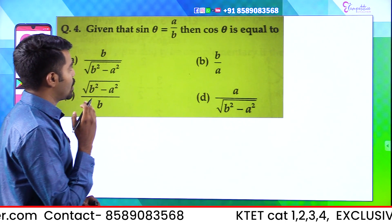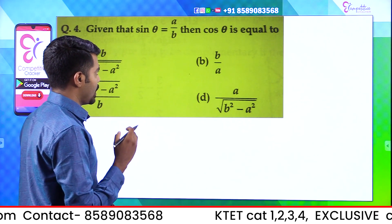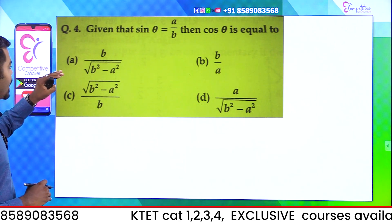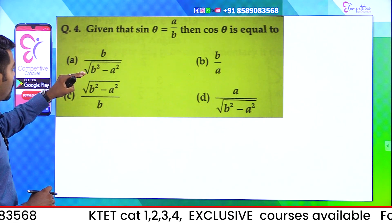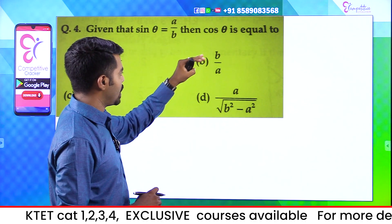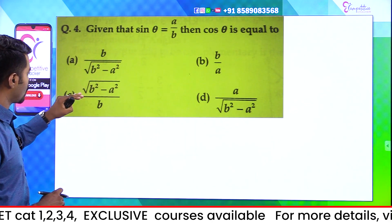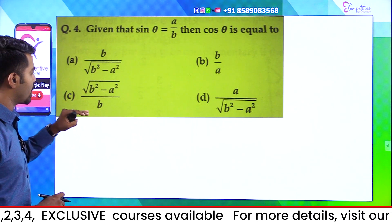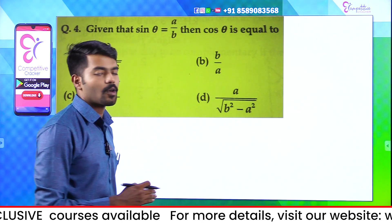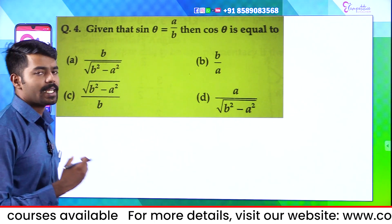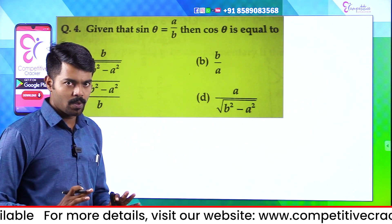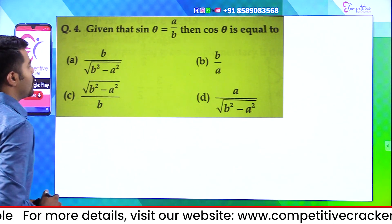Given that sin θ = a/b, then cos θ equals: Option A, b/√(b²−a²); Option B, b/a; Option C, √(b²−a²)/b; Option D, a/√(b²−a²). How do we do this? We will use trigonometry in the same way and talk about the answer.